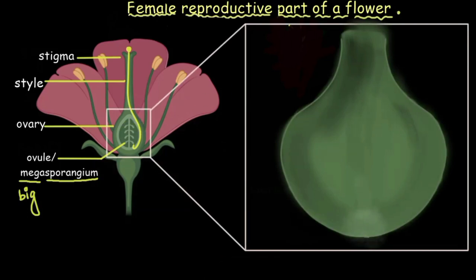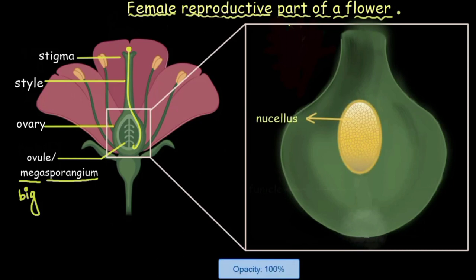And an ovule is made up of a mass of cells which is called the nucellus. This word nucellus is derived from the word nucleus and they have named it so because as the nucleus is the center or the core part of an atom, in the same way the nucellar cells form the core part of an ovule.